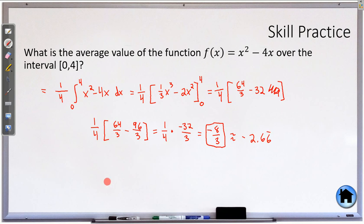Now what does that mean? Well if we think about the graph here of x² - 4x, it looks like this. And here is 4, here is 0. So the average height here, the average value of all of these y values, is about -2.66.